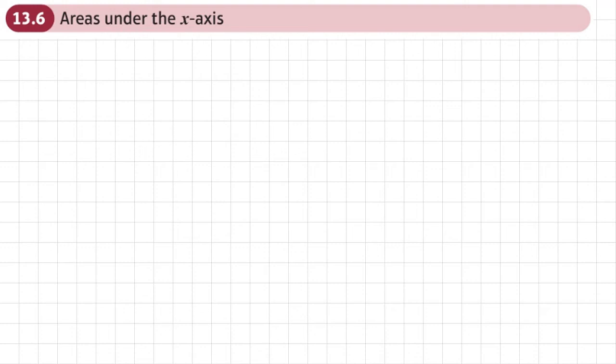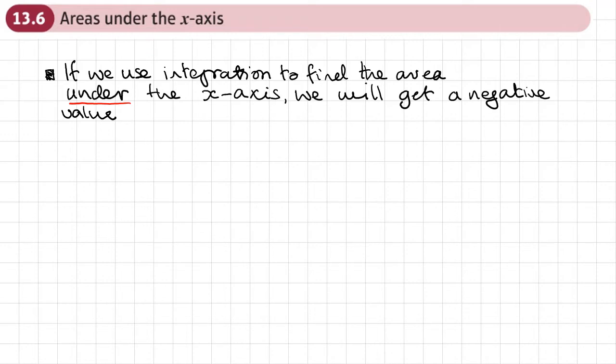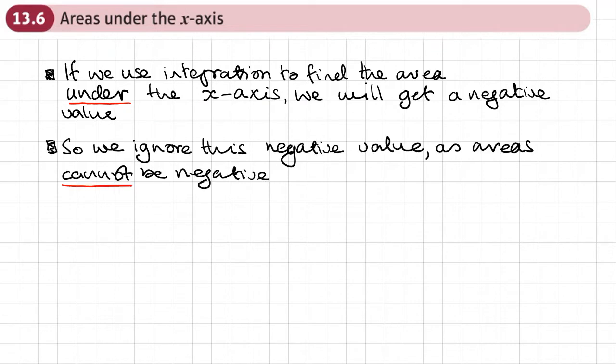This is the sixth section of chapter 13 on integration, and this section is about areas under the x-axis. If we were to use integration to find the area under the x-axis, we will get a negative value.